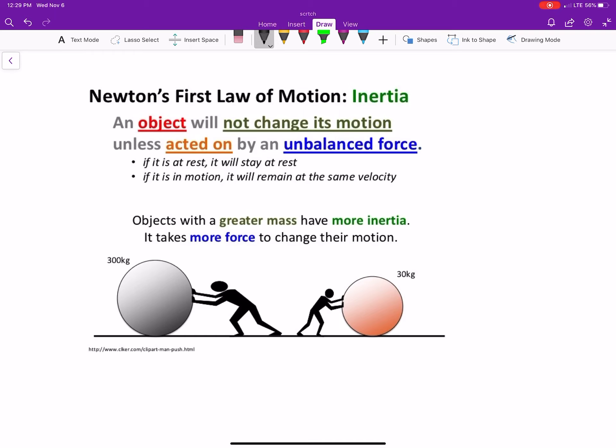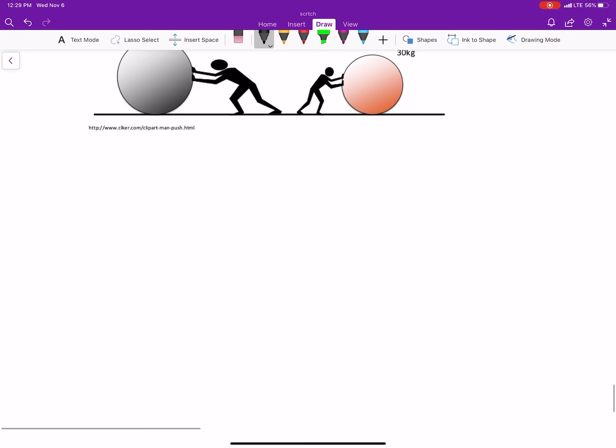An object will not change its motion unless acted on by an unbalanced force or a net force. If it's at rest, it stays at rest. If it's in motion, it stays in motion. So essentially what we're talking about is it'll go at the same speed and direction forever if there's no force acting on it. So if you're going this way at some speed and there's no force, you're going to continue going that way at that speed.